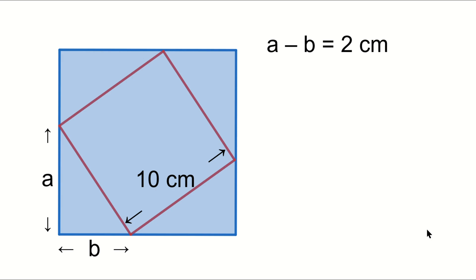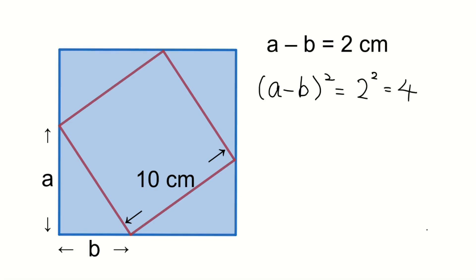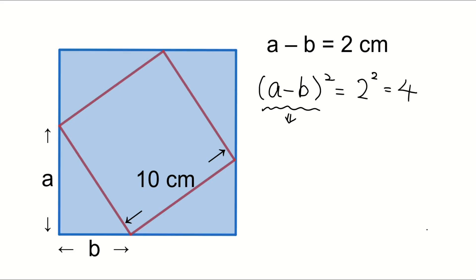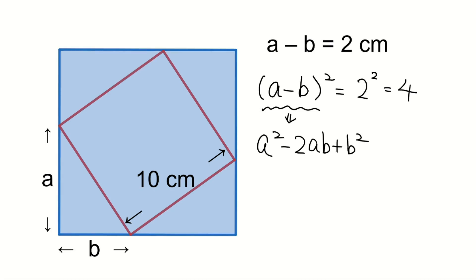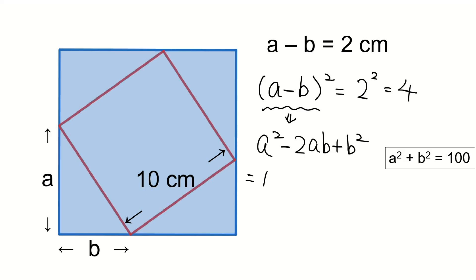Use the conditions given in the problem: A minus B equals 2. Square this equation — (A minus B) squared equals 2 squared equals 4. Expanding the left side: A squared minus 2AB plus B squared. Since A squared plus B squared equals 100, we get 100 minus 2AB equals 4, so 2AB equals 96.